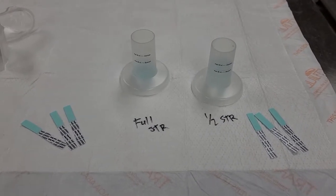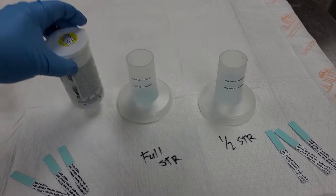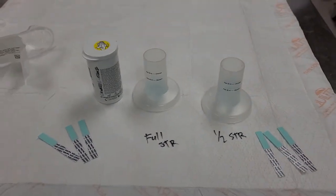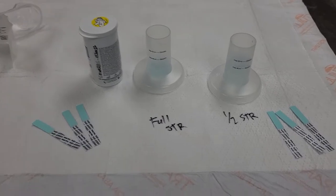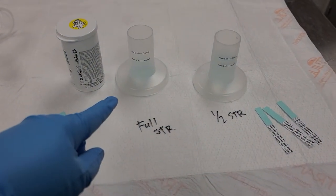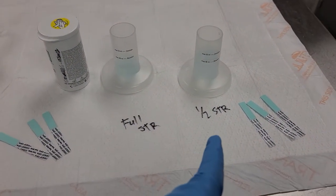Alrighty, so to test the minimum effective quantity strips or MECH strips for Cydex OPA, you're going to get a container with full strength Cydex and another container with half strength Cydex.